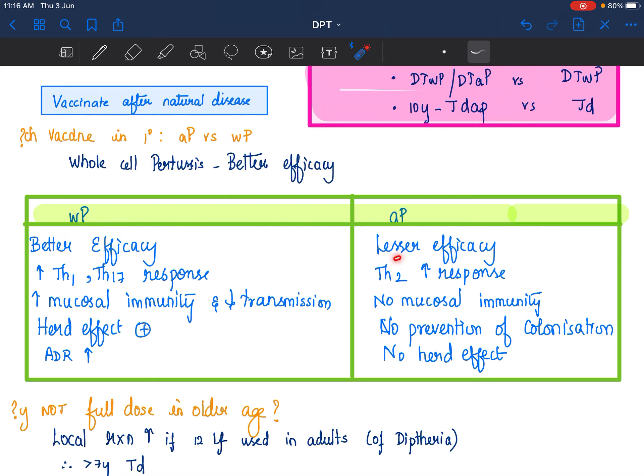Acellular pertussis comparatively has lesser efficacy. Basically, because rather than Th1, this is a Th2 cell response. It does not have mucosal immunity. As a result, it does not prevent transmission, colonization.